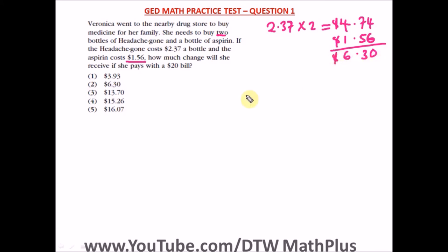So the question says how much change will she receive if she pays a $20 bill? So we are just to subtract $6.30 from $20, the $20 bill. So we have 20.00, then 6.30. Let's subtract this together. We're supposed to use our calculators but let's do this together.